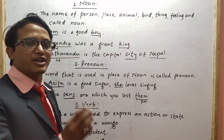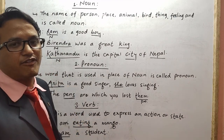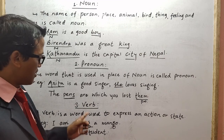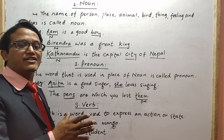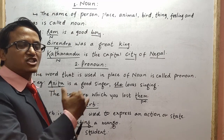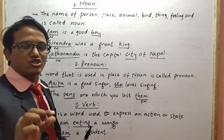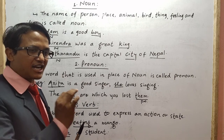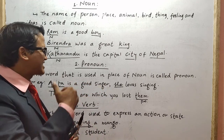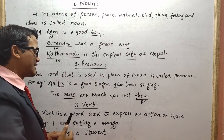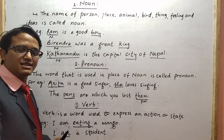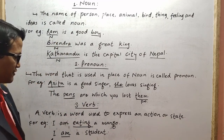Verb is the most important factor in grammar. Without the verb, we cannot speak even a word, we cannot speak even one sentence. So to make a sentence correctly, we need to know about the verb.